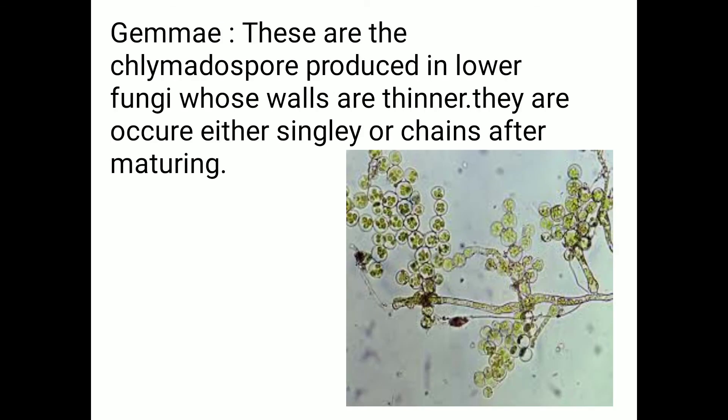Last one is gemma. Gemma means these are the chlamydospores produced in lower fungi whose walls are thinner; they occur either singly or in chains. After maturity, each chlamydospore is attached together and then they are detached from each other. Each chlamydospore germinates individually. Such a structure is called gemma.